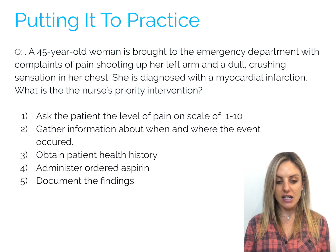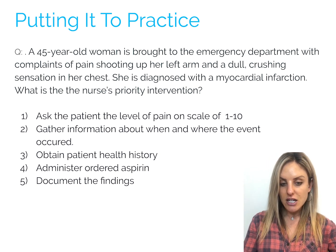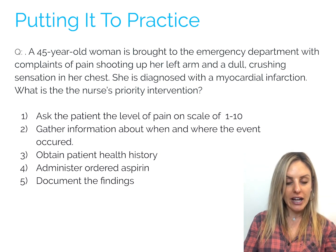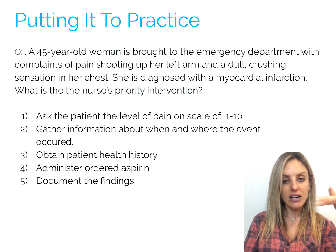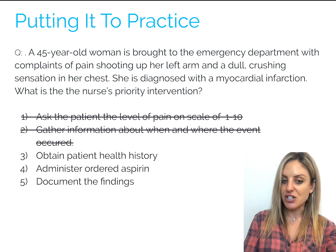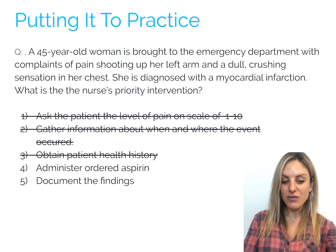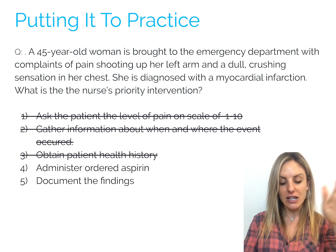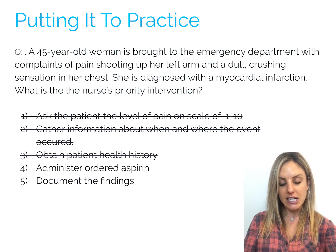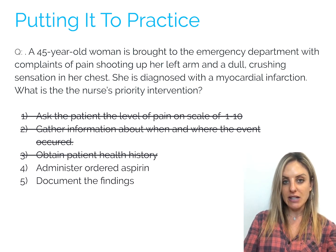Really pay attention to those answer choices. This is a priority intervention question, so some of these answer options are not interventions — we can rule them out right away. Asking the patient the level of pain on a scale of one to ten — that should have been done already during the assessment. So that's not an intervention; we can cross that one out. Gather information about when and where the event occurred — again, assessment. Obtain a patient health history — again, assessment. These first three aren't relevant because those aren't interventions, even though they definitely needed to have been done. Not right now, because right now we're on the intervention portion. So now we have administer ordered aspirin or document the findings. Documenting the findings is not a priority intervention. Administer ordered aspirin — now let's jump into the Picmonic.